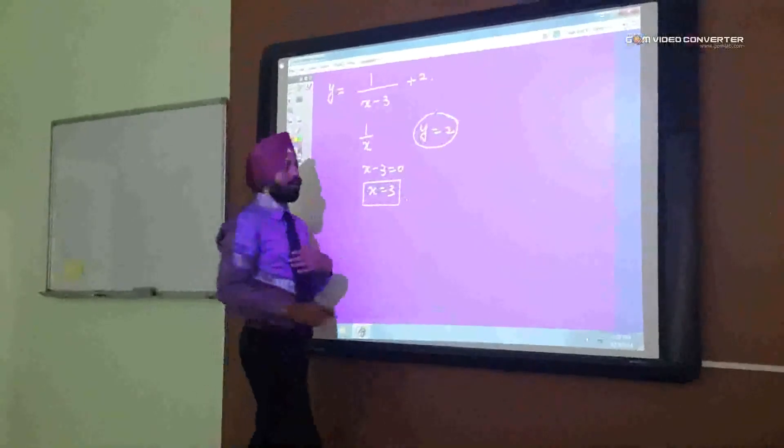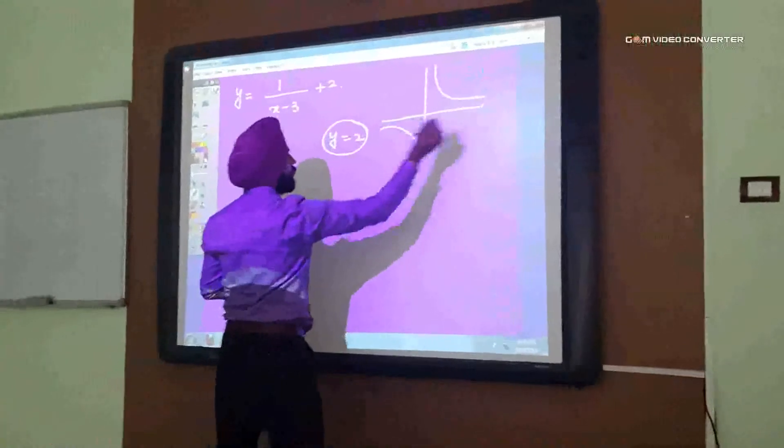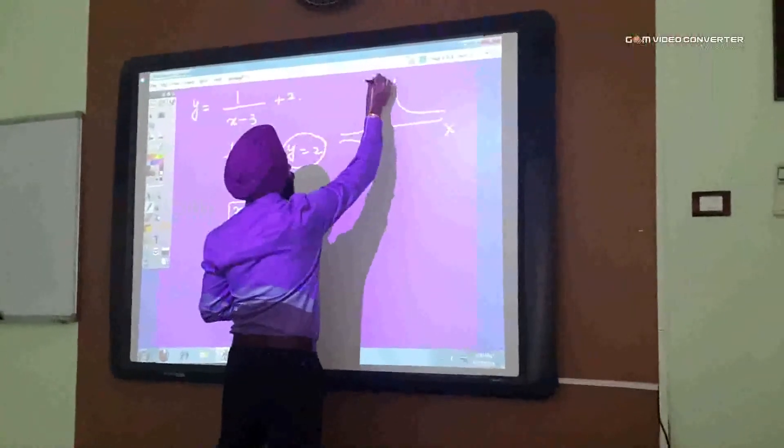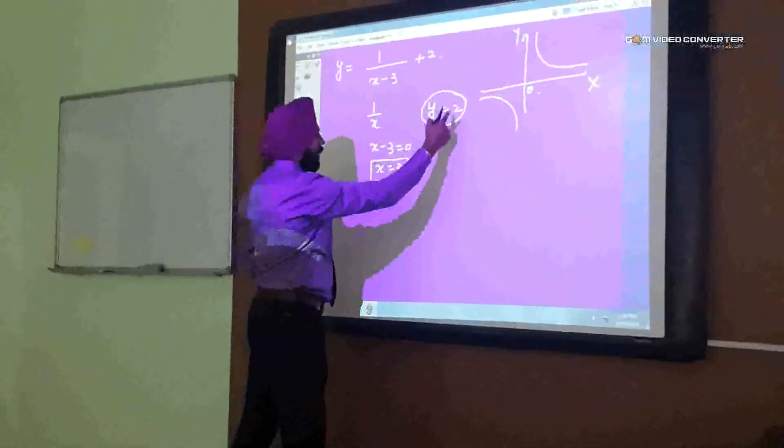Now I got the new coordinates 3, 2. So what I will do now, because the standard curve is this and this x and this is y 0, so I will plot